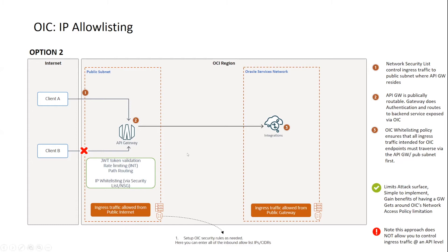We do need to mention that the OIC network allow policy is still active in this case, and it is only allowing access to OIC from the VCN or the public subnet. So the door is only open to the API gateway — from OIC's perspective, all it's trying to do is ensure that the API gateway cannot be bypassed, making sure traffic goes through it.